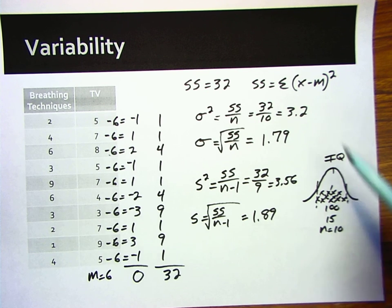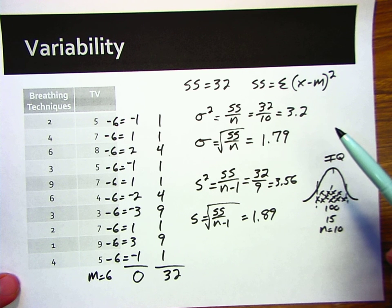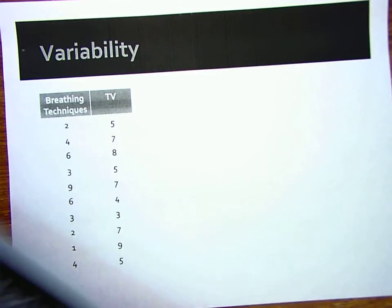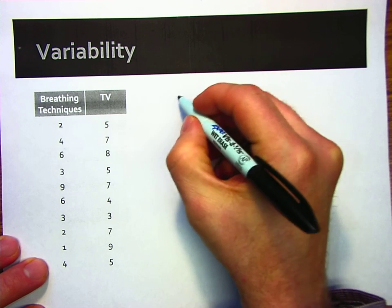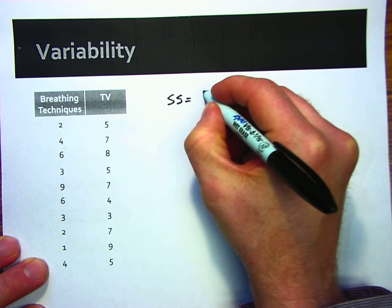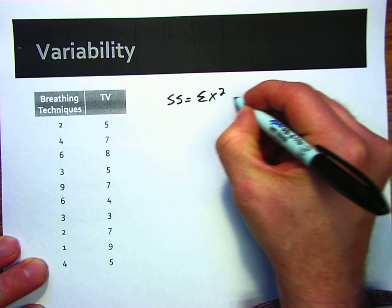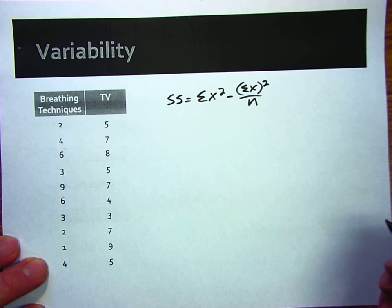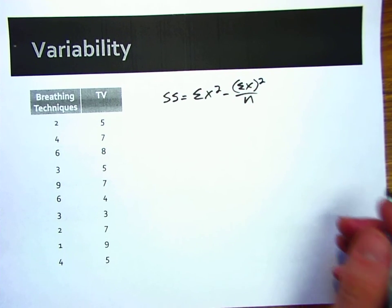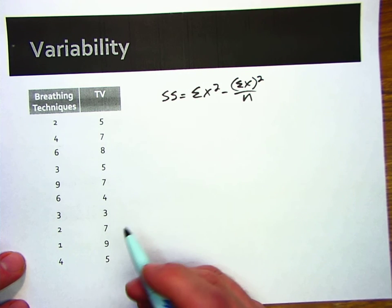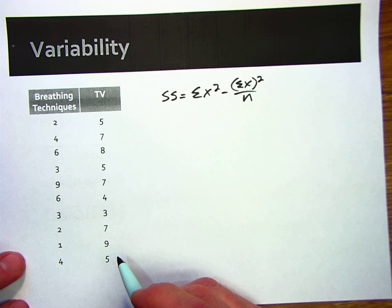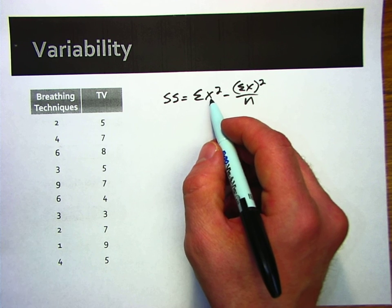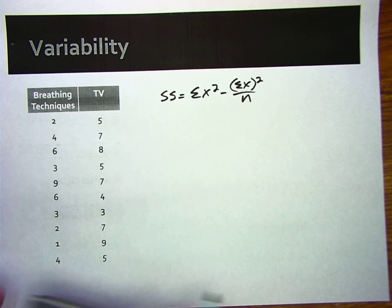Next, what I want to show you - so what I showed you here is the definitional formula for calculating the sum of squares. Now what I'd like to show you is the computational formula for the sum of squares. So the computational formula, sum of x squared minus the sum of x squared divided by n. Let's walk through this formula. Let's use this same set of data. Let's just focus on the TV set of data for this, for figuring out the computational formula. And so we're going to take each score that this says, we're going to take each score and square it, and we're going to add up those squared scores.